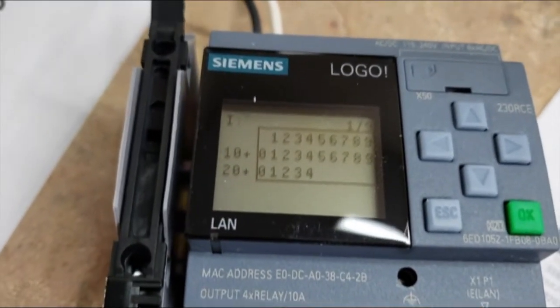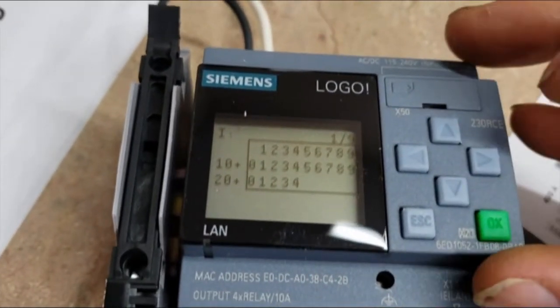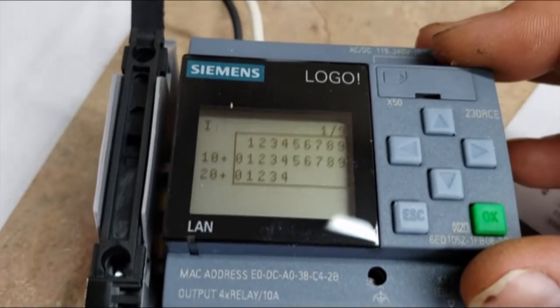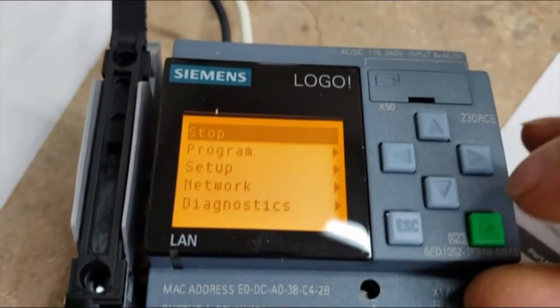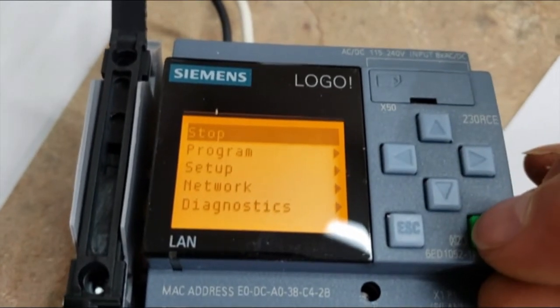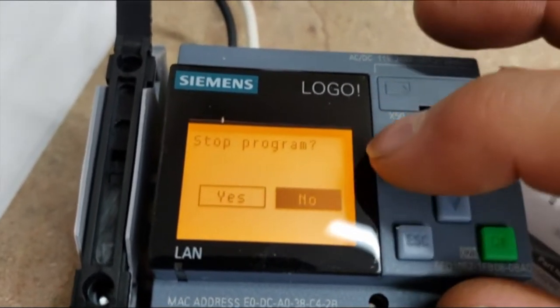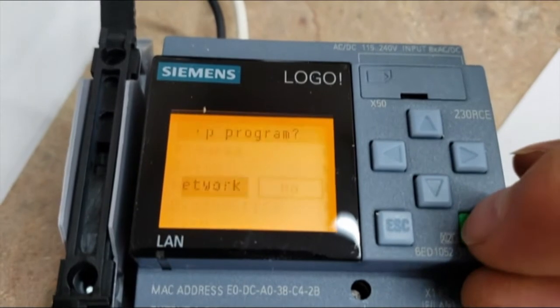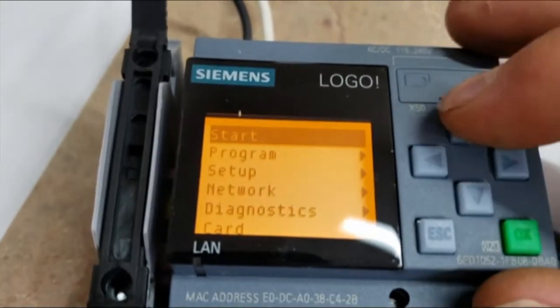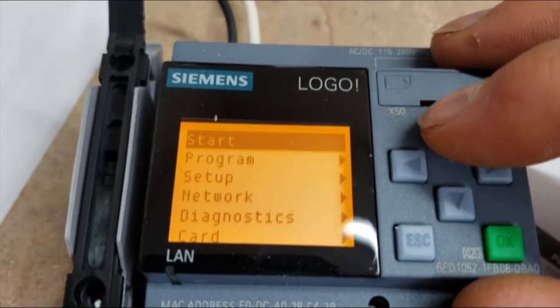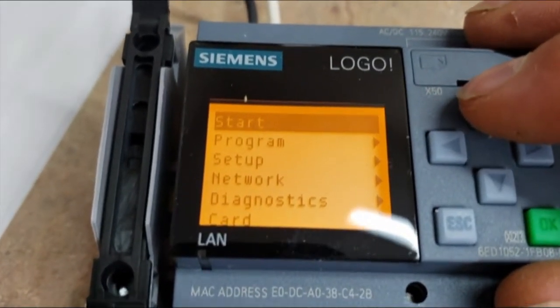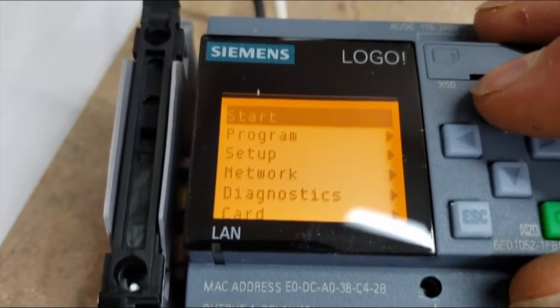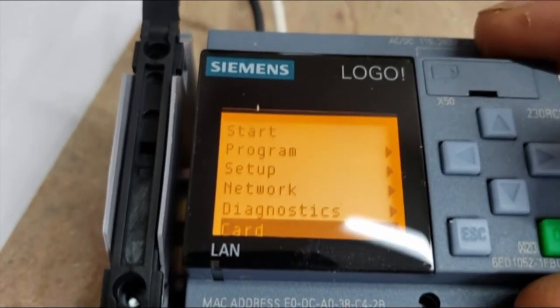So we currently have a program running and in order to read and write to the card we have to stop the program. So if we do escape and go to the main menu, we do enter to stop and we say yes. You'll see that the top menu changes to start so that we can actually start it again, but now we also have the menu item card at the bottom.